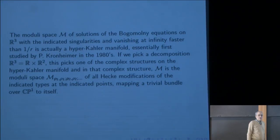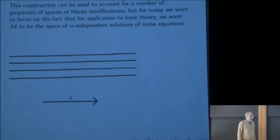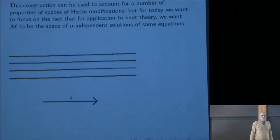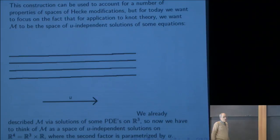We've reinterpreted the space that's used in symplectic Khovanov homology as a space of solutions of PDEs in three dimensions. For knot theory, we want M to be a space of u-independent solutions of some equations. We got M as a space of solutions of some equations, but there wasn't any variable that the solutions didn't depend on — not yet. We've described M as solutions of some PDEs on R^3, so now we have to think of M as a space of u-independent solutions on R^4 = R^3 × R, where the second factor is parametrized by u.